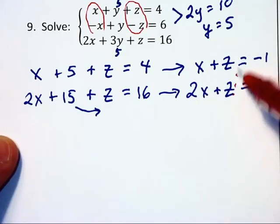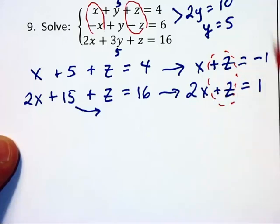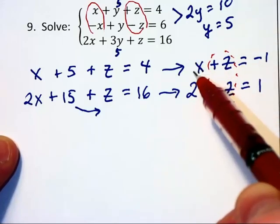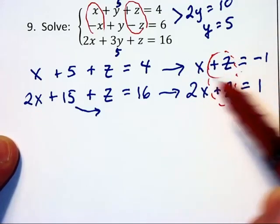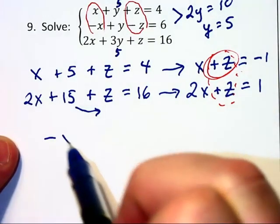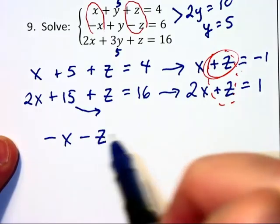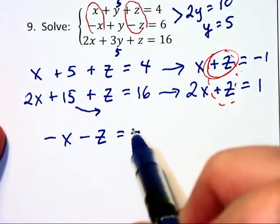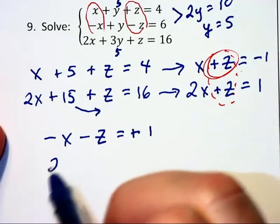Now all we need to do is eliminate these z's. I'm going to multiply that first equation through by negative 1, so I can cancel out here, and that will give us negative x minus z is equal to positive 1,